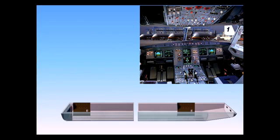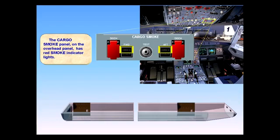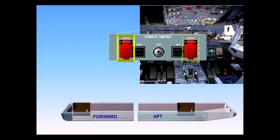The cargo smoke panel on the overhead panel has red smoke indicator lights. There are two guarded discharge switches and one fire bottle. Each switch controls one squib or discharge head of the bottle. When pushed, the fire bottle is emptied into the respective compartment. The extinguishing agent is discharged via one nozzle into the forward compartment or two nozzles into the aft compartment.